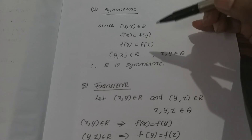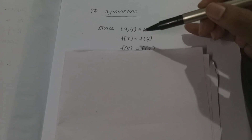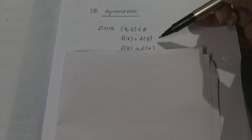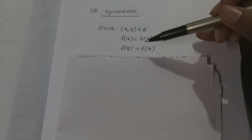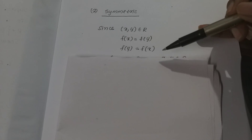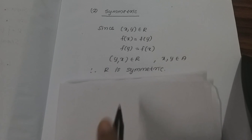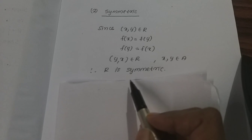For symmetric: if (x, y) belongs to R, then f(x) equals f(y). This implies f(y) equals f(x), so (y, x) belongs to R. Therefore R is symmetric.